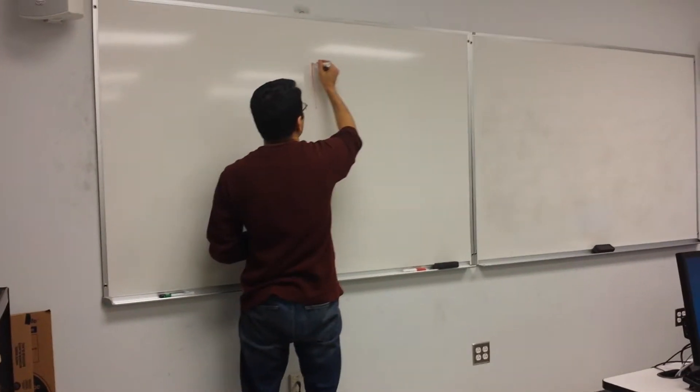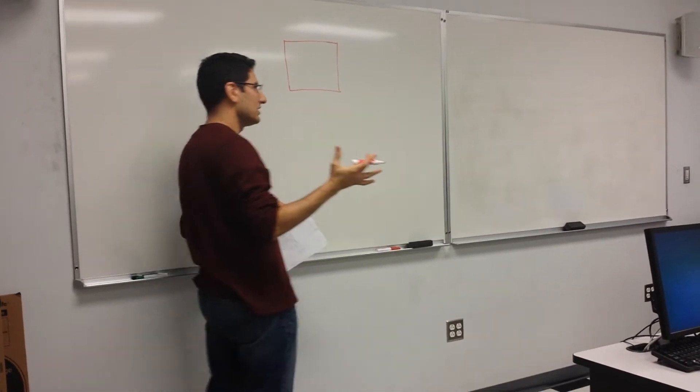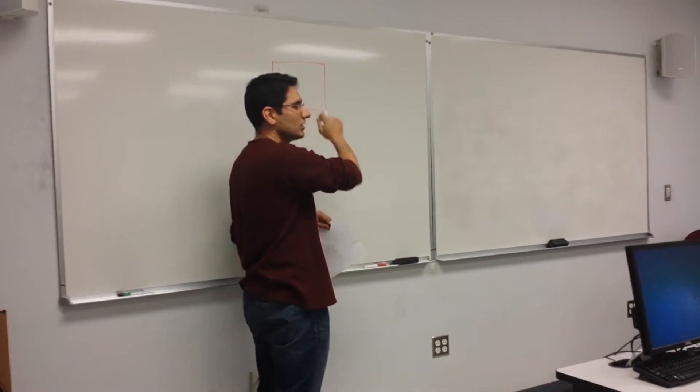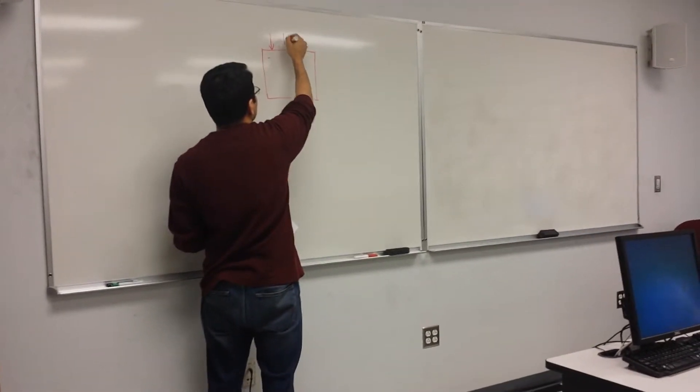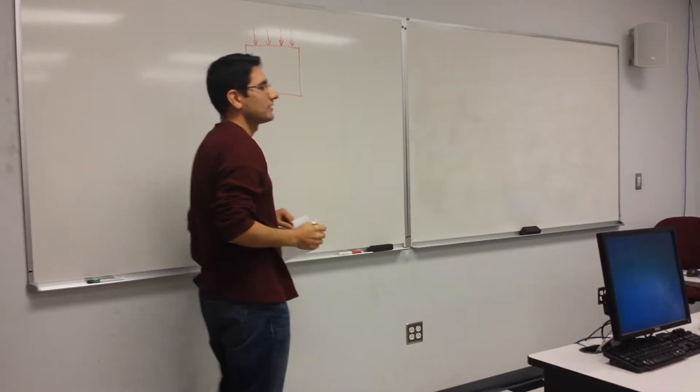So you guys have been provided with a 4x4 keypad. It means it has 16 keys. From here, four in each row and four in each column. So what you will do, you will need 8 pins to connect this keypad.